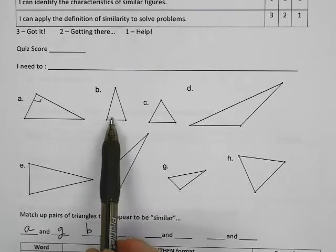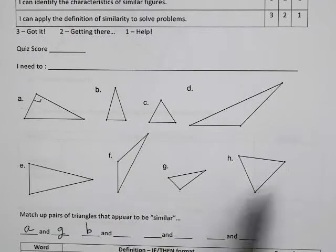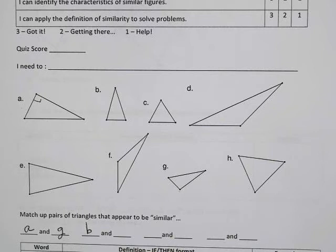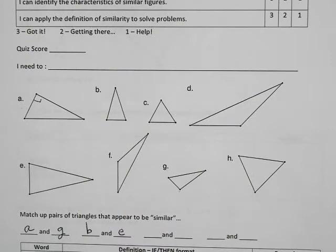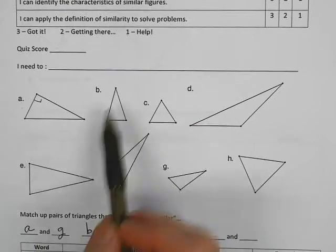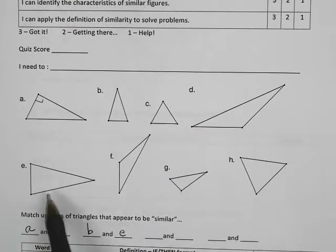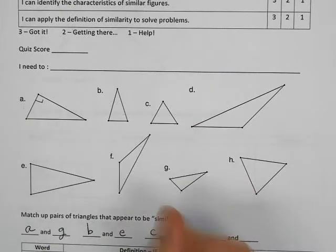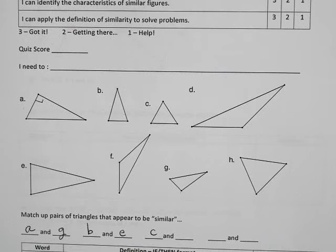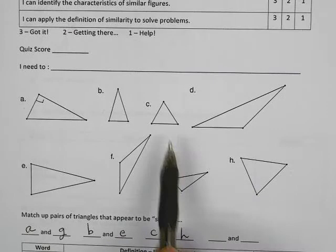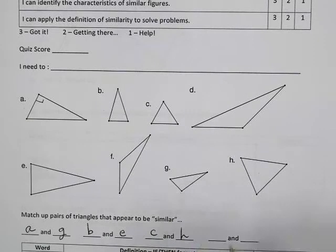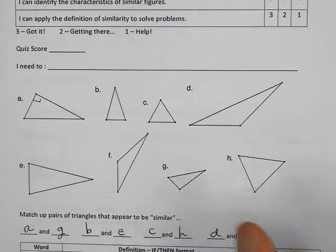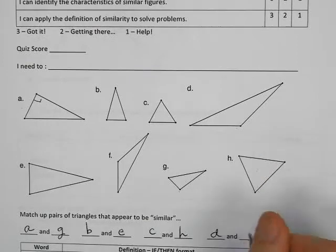Now look for B. Think about what kind of a triangle B is. Is there one here that looks similar? I hope you're going to pick out E. They're both isosceles, and they're kind of tall and steep. C, which one looks similar to C? That should be an easy one to pick out. Hopefully you see H. They both appear to be equilateral triangles. And then that would leave D, this big obtuse triangle, to go with F.